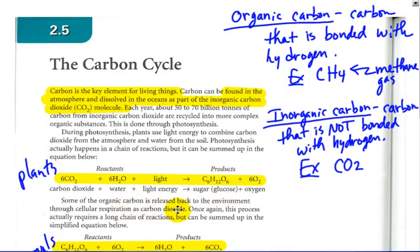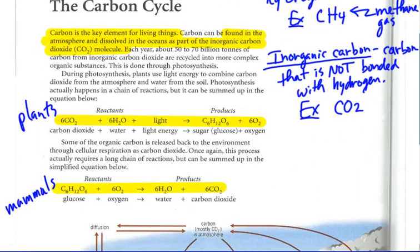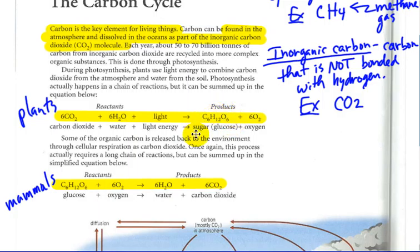Some of the organic carbon is released back to the environment through cellular respiration as carbon dioxide. Once again, the process actually is longer, but we just use this to summarize it. And if we look at the reverse of that, sugar and oxygen is what mammals take in, such as our cells. And with that, we make water and carbon dioxide. So you can see it's the reverse process of photosynthesis.